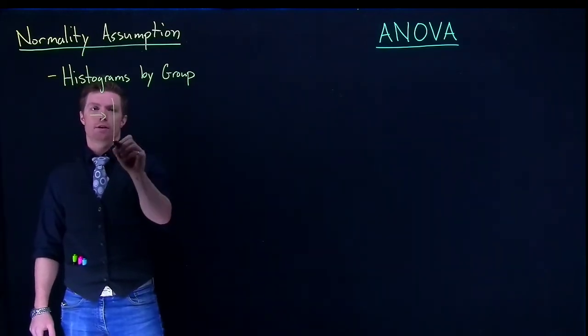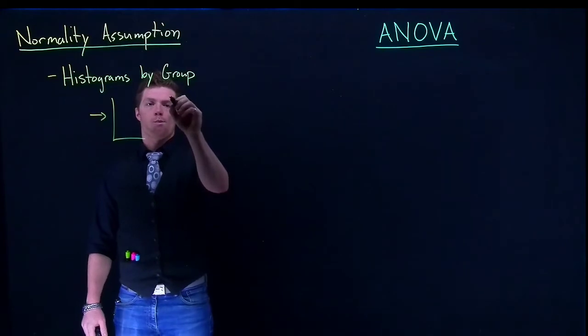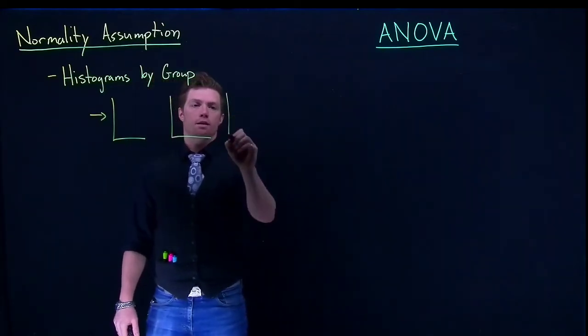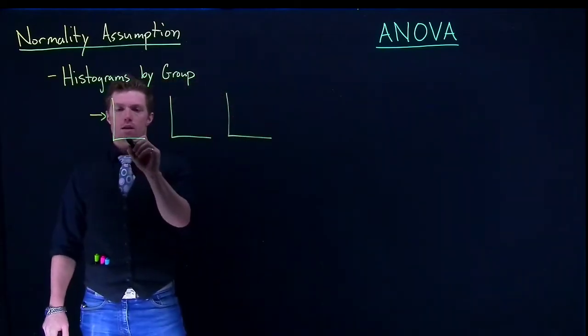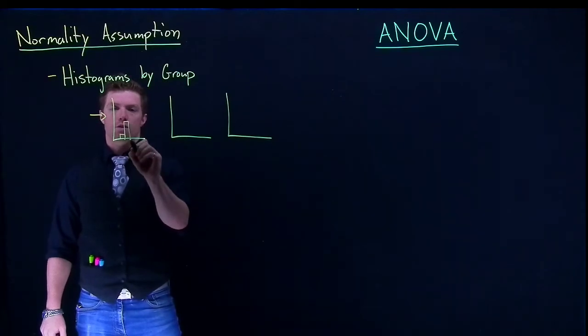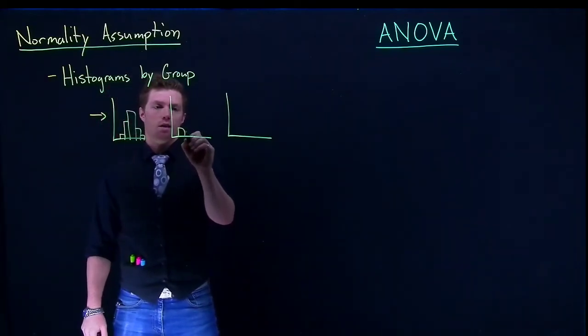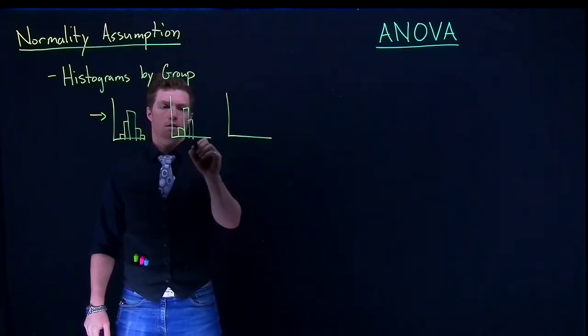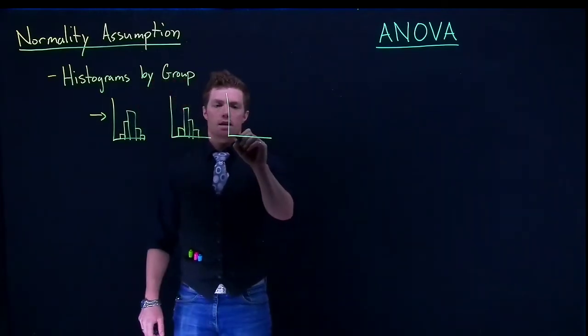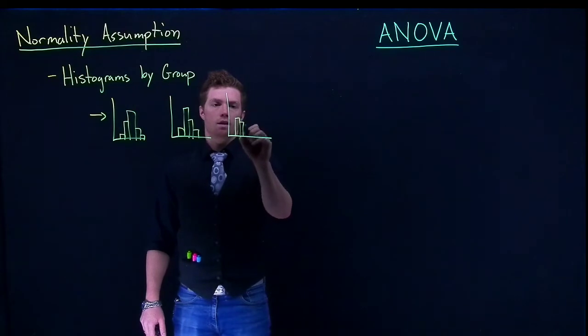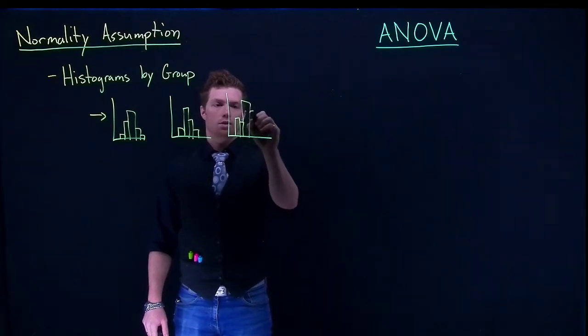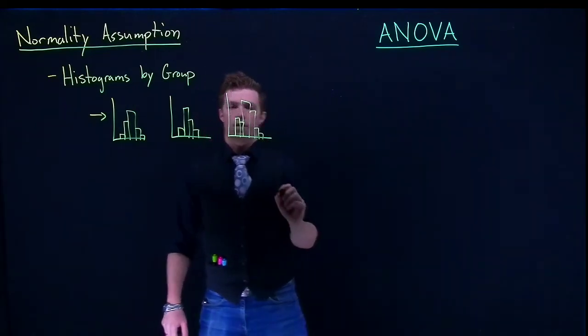So let's say that we've got three different groups. So we're going to have three different little histograms and we might see something that looks like this on the first guy. We might have something that looks like this on the second guy and we might have something that looks like this on the third guy.